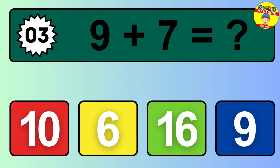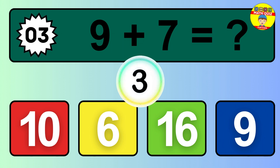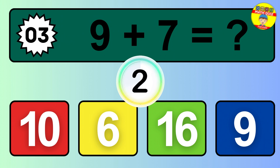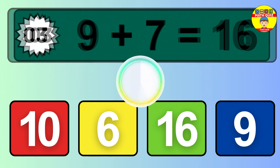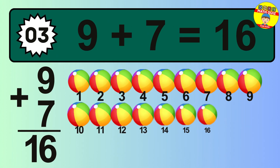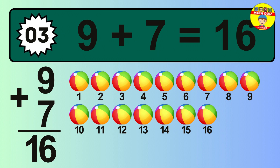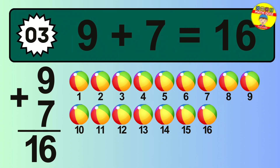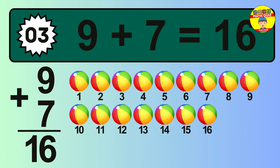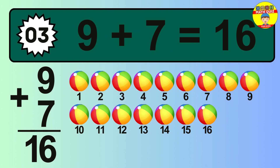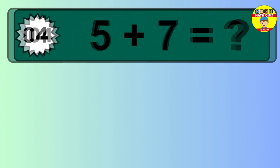Question 3. 9 plus 7 equals what? So the answer is 9 plus 7 is 16. Let's count it: 1, 2, 3, 4, 5, 6, 7, 8, 9, 10, 11, 12, 13, 14, 15, 16.